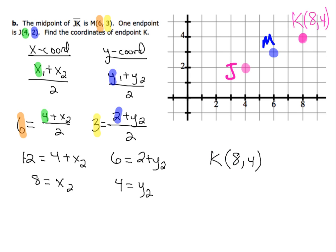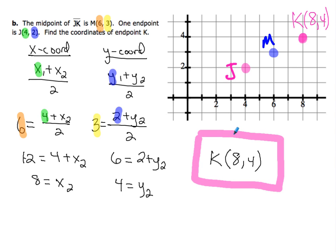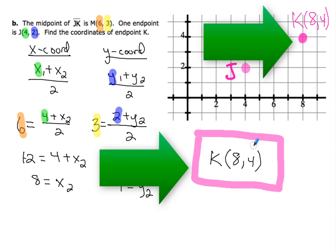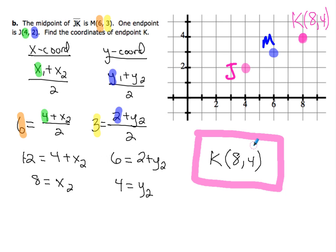I want to double-check to make sure that's what I came up with both algebraically and graphically. Looking at the coordinates I came up with on the graph — (8, 4) — that's the same thing I came up with algebraically. So that's all there is to finding the other endpoint when you're given the midpoint and one of the endpoints.